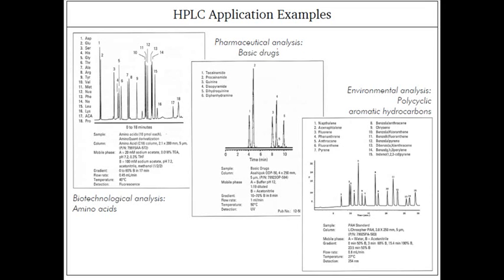These are some examples. We can use it for pharmaceutical purposes for looking for basic drugs, and you can also use it for distinguishing amino acid sequences. Thalassemia testing can also be done using the HPLC system.